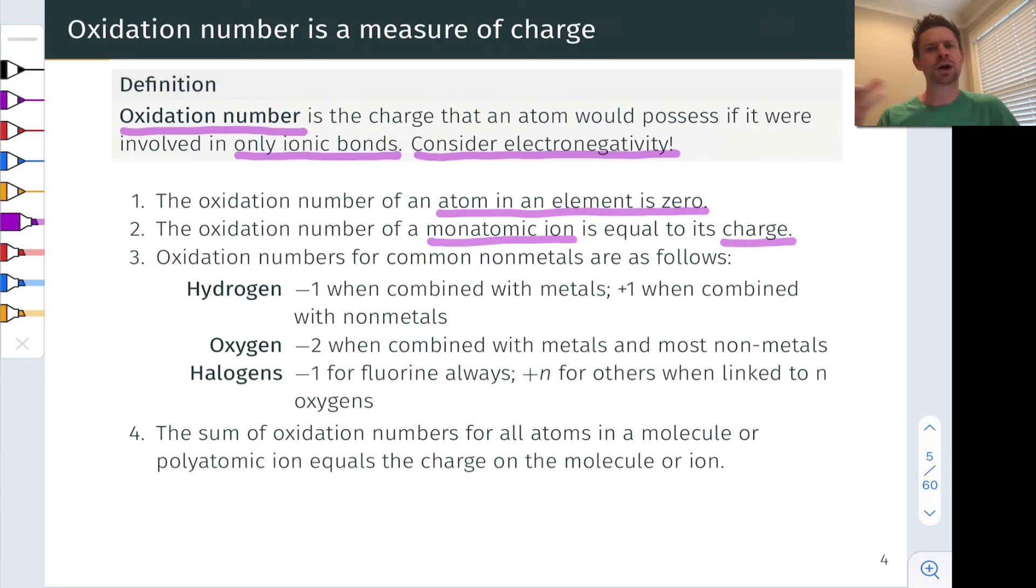Rule number three lists some common oxidation numbers for common elements. Hydrogen, most commonly, it's going to be linked to a non-metal, in which case its oxidation number is plus one, when the non-metal is more electronegative than hydrogen, which is typical. But when hydrogen is linked to a metallic element, well, then hydrogen itself is more electronegative than the metal, and so its oxidation number is negative one. And again, you can infer this from the definition at the top of the slide by taking the bond that hydrogen is involved in and giving those electrons to the more electronegative atom in the bond.